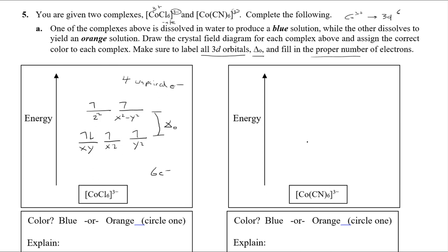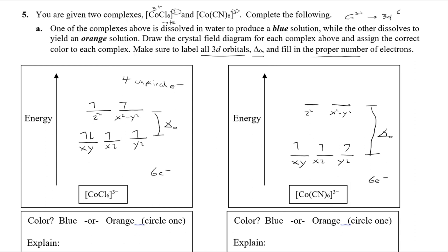For the hexacyano complex: the cyano ligand is at the far end of the spectrochemical series and gives a large Δ_oct. I draw the same octahedral splitting diagram (d_z², d_x²-y² on top; d_xy, d_xz, d_yz below) but with a much bigger gap. With six electrons, the gap is too large an energy penalty to jump, so all six electrons pair up in the three lower orbitals — giving zero unpaired electrons.